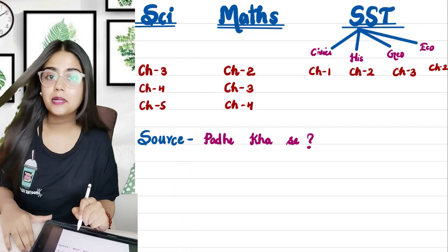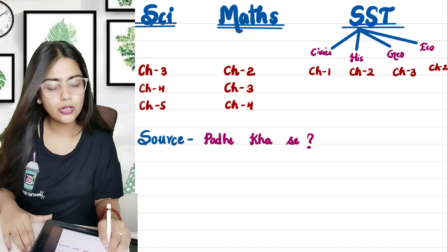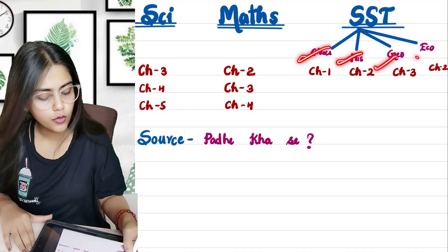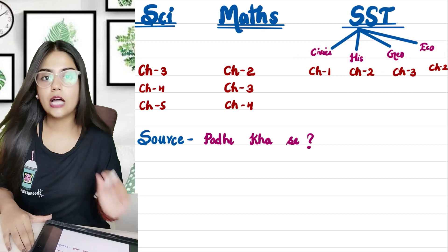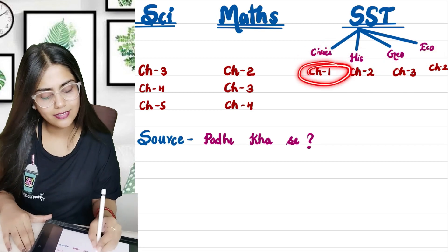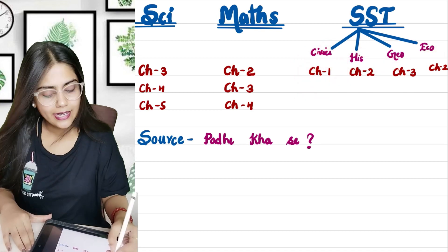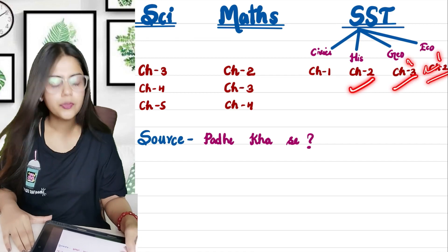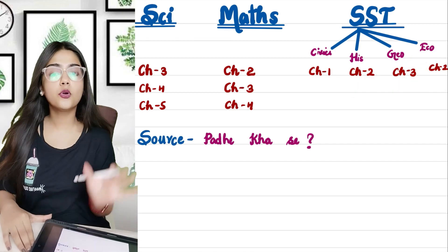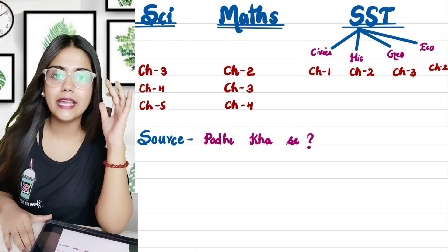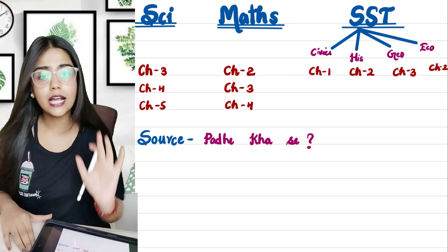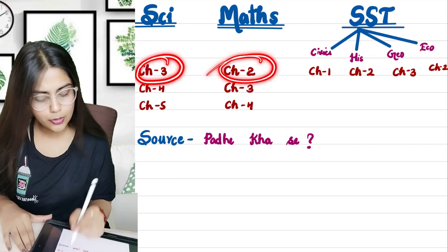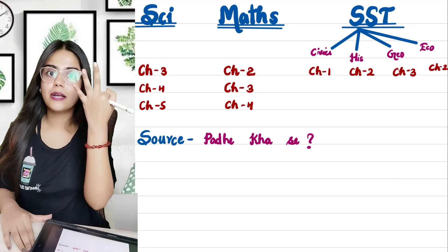Make a timetable for all subjects. In Social Science, you have subjects like Civics, History, Geography, and Economics. Write down: I need to continue Civics chapter 1, History chapter 2, Geography chapter 3, and Economics. Set a target — for example, complete Science chapter 3 and Maths chapter 2 in 3 days.